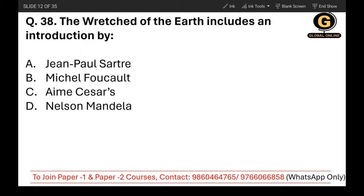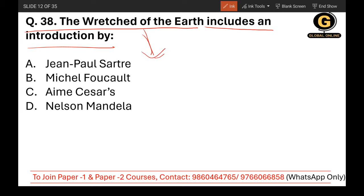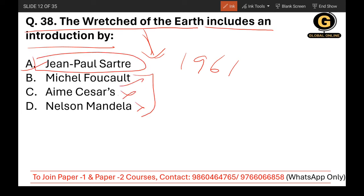Question 38: The Wretched of the Earth includes an introduction by whom? Read the question carefully — it is asking about the introduction, not the author. The Wretched of the Earth was written by Frantz Fanon in 1961, but the introduction was written by Jean-Paul Sartre. So A — Jean-Paul Sartre — is the correct answer.